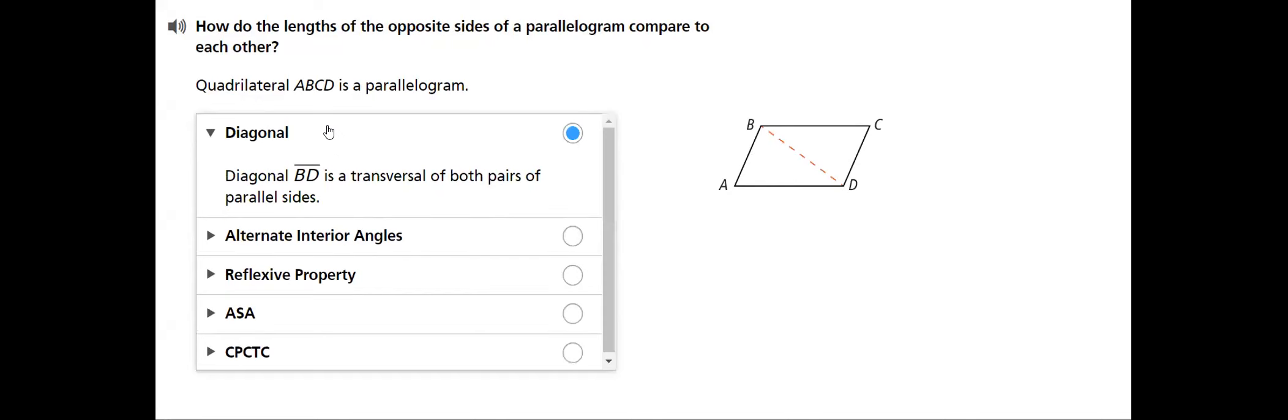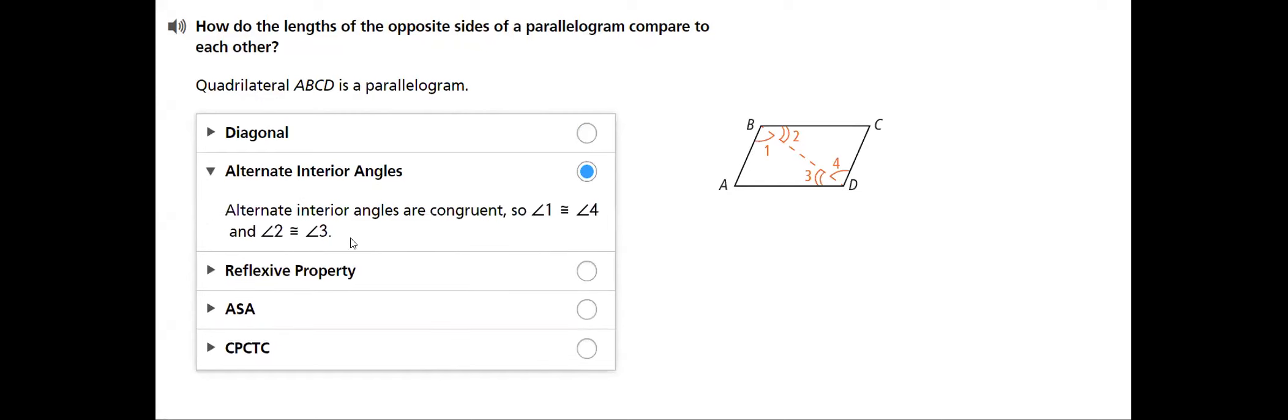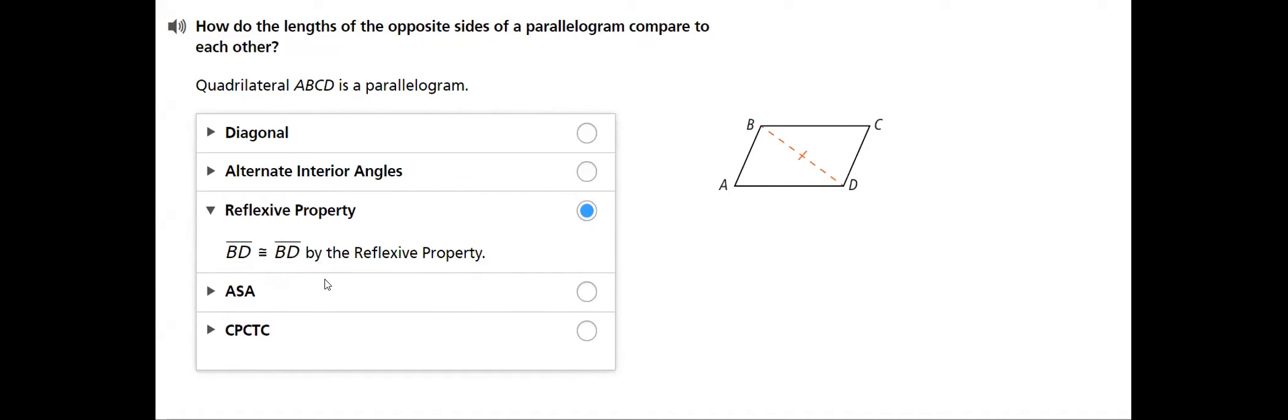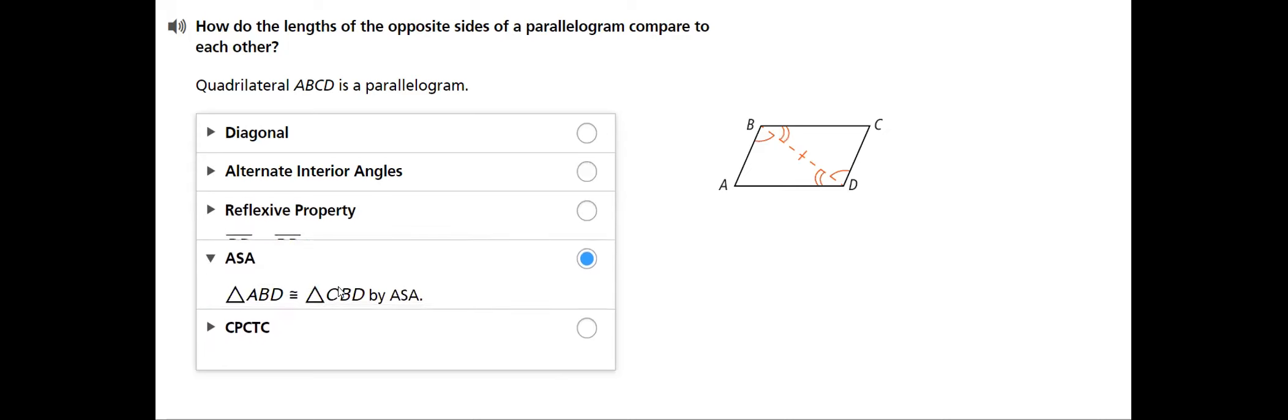We will see what are the diagonals. As we defined before, what is a diagonal? Diagonal is a segment that connects non-consecutive sides. The alternate interior angles, which both of them. What is the reflexive property? We already discussed this before.